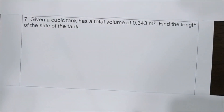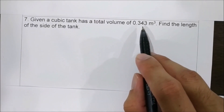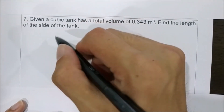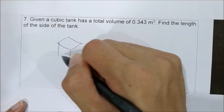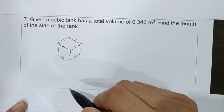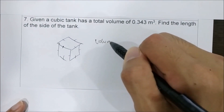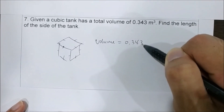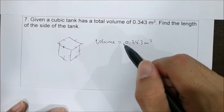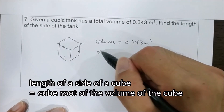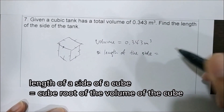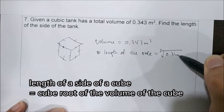Question 7: a cubic tank has a total volume of 0.343 metre cubed. Find the length of the sides. Since it is a cube, all sides are equal but unknown. To find the side length, take the cube root of 0.343, which equals 0.3 metres.